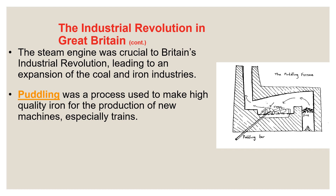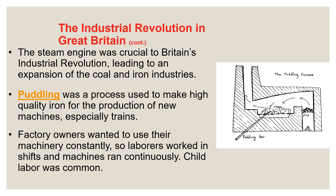The steam engine was crucial to Britain's Industrial Revolution, leading to an expansion of both the coal and iron industries. When it came to powering the steam machine, you need coal — you need to burn the coal to produce the steam that powers the machine. You also need something to build the machines out of, and that's where the iron industry came in. Puddling was a process used to make high-quality iron for the production of new machines, especially things like locomotive trains. Factory owners wanted to use their machinery constantly, so laborers worked in shifts and machines ran continuously — which is why you needed strong, high-quality iron so machines wouldn't break as easily.